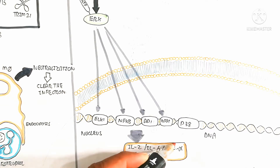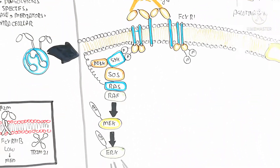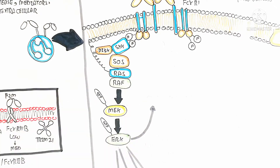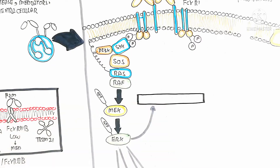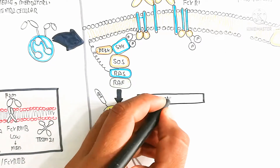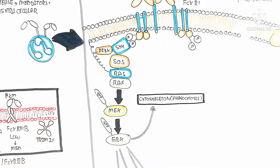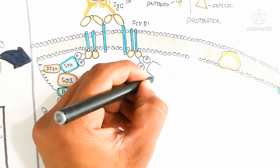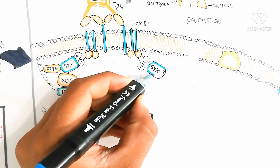In the nucleus, the DNA is used for transcription to translate these genes and produce proteins in the form of interleukins, cytokines, and inflammatory mediators. The cytoskeleton is also stimulated through the ERK pathway, leading to phagocytosis of the pathogen, which moves inside the cell.